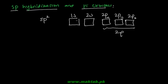Electron distribution in the excited state: there are two electrons with opposite spin in 1s. In 2s, 2px, 2py, and 2pz all of these orbitals carry 1 electron each. And we said that any 2p orbital along with 1s you have to hybridize.